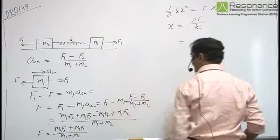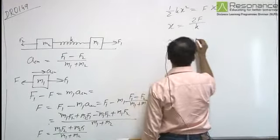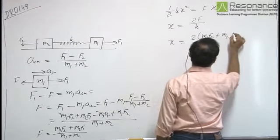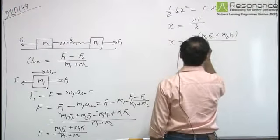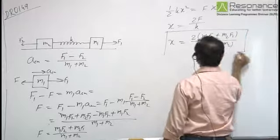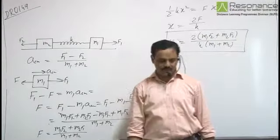Substituting the expression for F, the maximum elongation is 2 times (M2F1 plus M1F2) divided by K times (M1 plus M2). This is the maximum elongation of the spring.